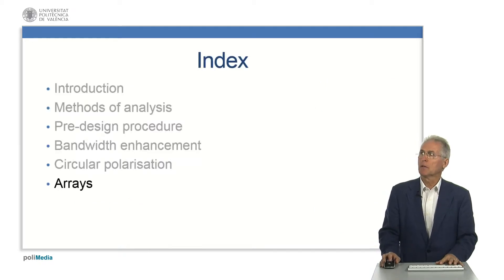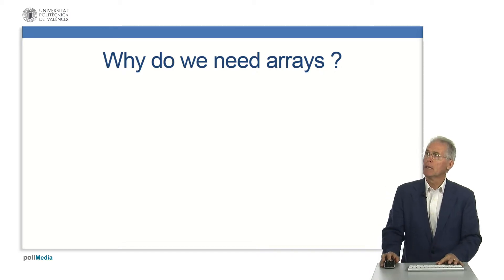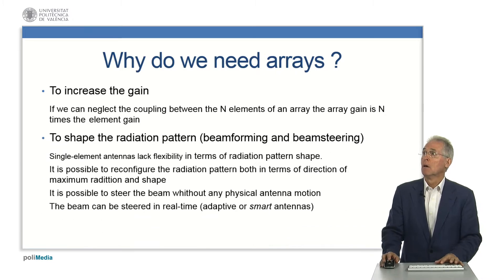The topic of this module of the online course on microstrip antennas is arrays. Why do we need an array? Well, we may need an array just because we want to increase the gain. If we neglect the mutual coupling in an N-element array, the array gain is simply N times the element gain.